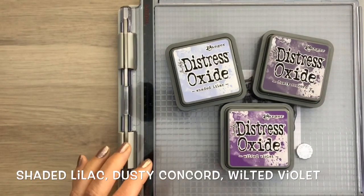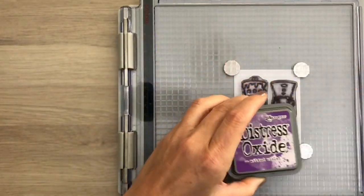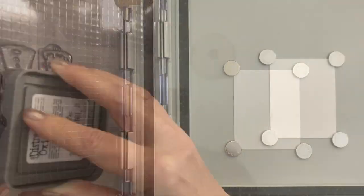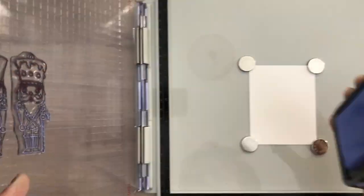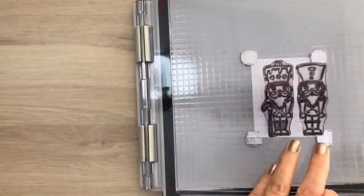I'm going to use Distress Oxide ink. I have two stamps on the platform and the card in place. And now I'm going to ink the stamp just the bottom part. I stamp it a few times to get a deep color.